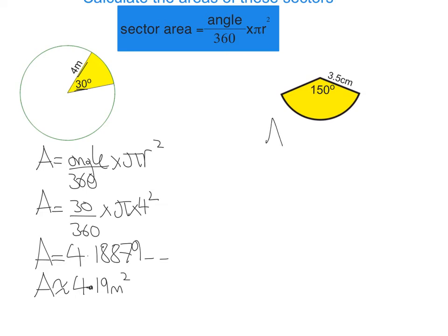Looking at the second one, again, it's a formula question. The first thing I do is write out my formula: angle over 360 times pi r squared.